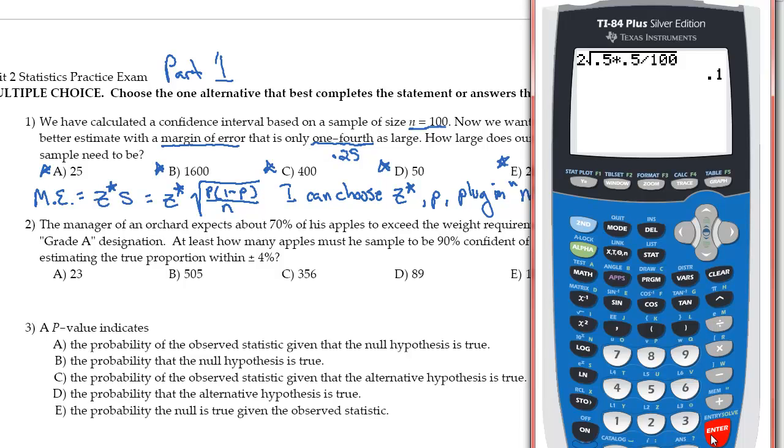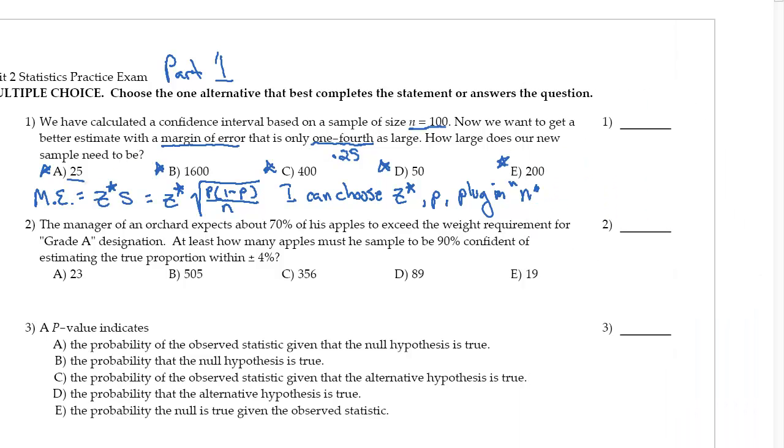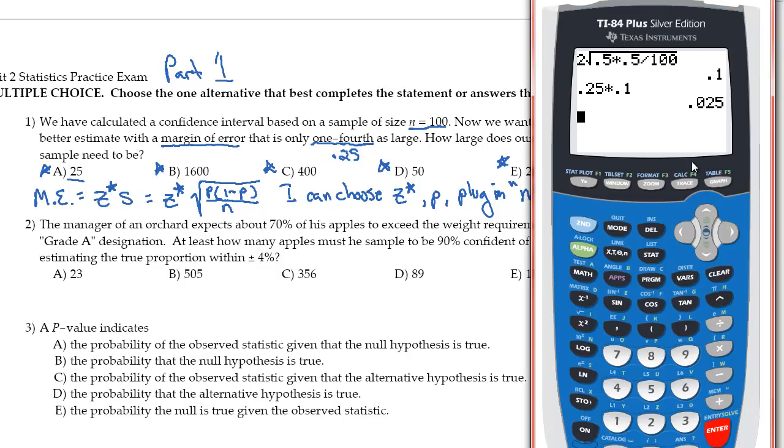So I need something that's one quarter as large as 0.1. I need something a quarter of that. So 0.25 times 0.1 is 0.025. I'm going to plug in each one of these values until I get 0.025.